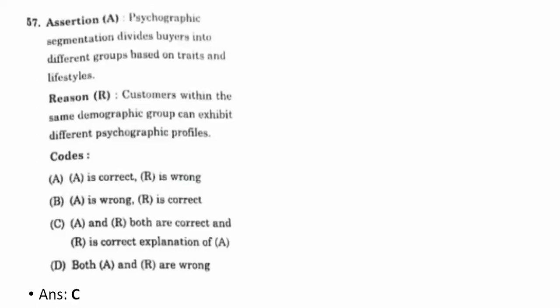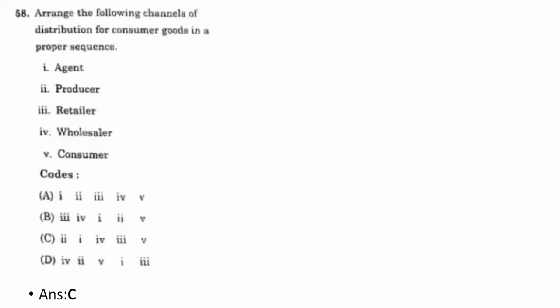Fifty-seventh question — assertion and reasoning: psychographic segmentation divides buyers into different groups based on traits and lifestyles. The reason is customers within the same demographic groups can exhibit different psychographic profiles. The correct option is C — A and R are both correct and R is the correct explanation of A.